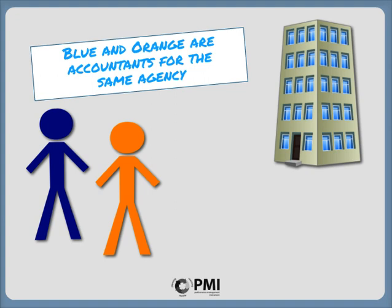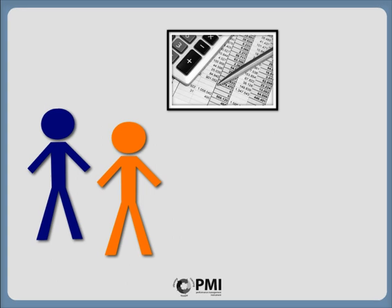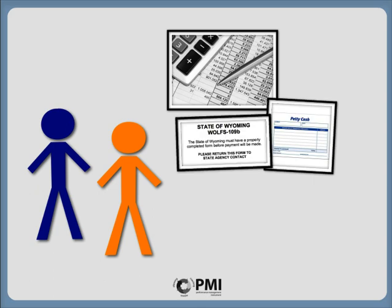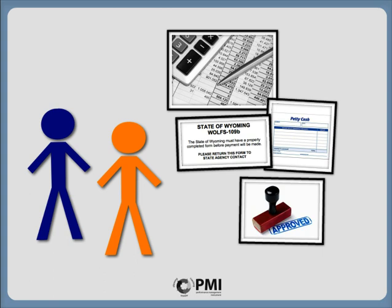Blue and Orange are accountants who work in the same agency. Their job duties are the same. They both examine, analyze, and interpret accounting records so they can give advice and prepare statements. They also maintain petty cash funds, maintain fixed assets on Wolf's, and review and approve department Wolf's documents for AP and AR.